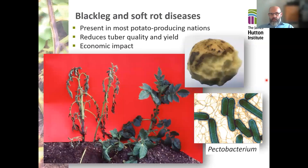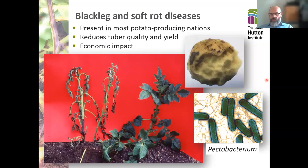Blackleg disease is caused by two or three different types of bacteria. The one that we're focusing on is called Pectobacterium. It's an organism very similar to E. coli, but can cause disease in plants rather than humans. It causes a disease called blackleg or soft rot, and these diseases are present in most, if not all, potato producing nations, and they reduce tuber quality and yield and have a major economic impact.